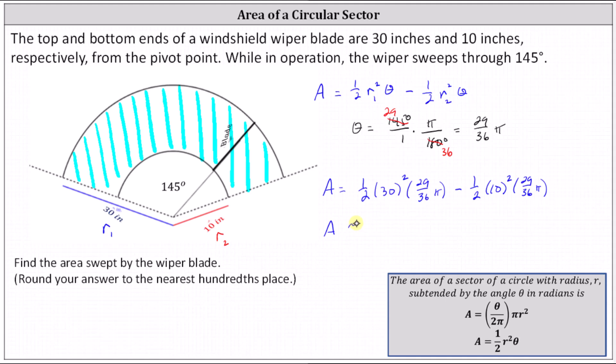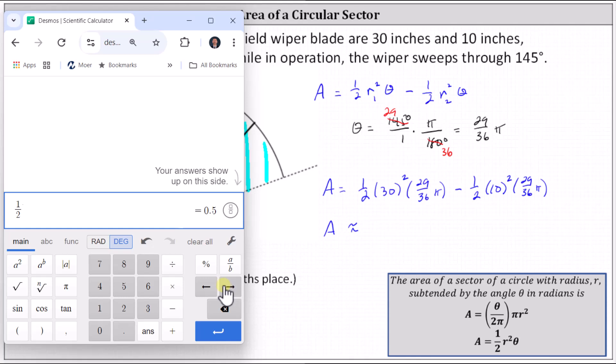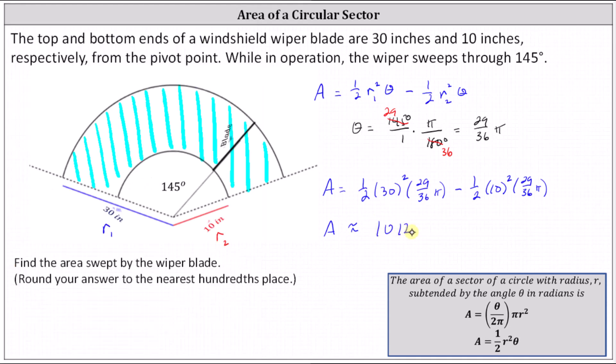And now we go to the calculator and round to two decimal places, which gives us an area of 1012.29 square inches. I hope you found this helpful.